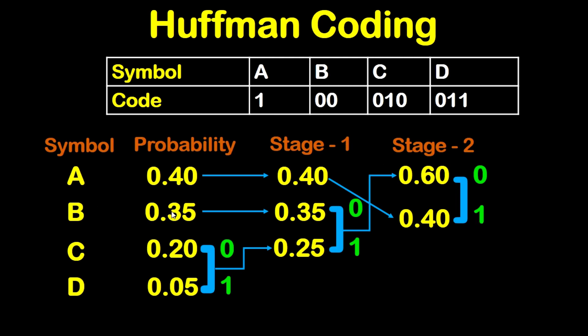Now for B, let's trace the path. At the end we are reaching 0. Reading binary numbers from right to left, we have 0 then 0. So the code for B is 0 0.